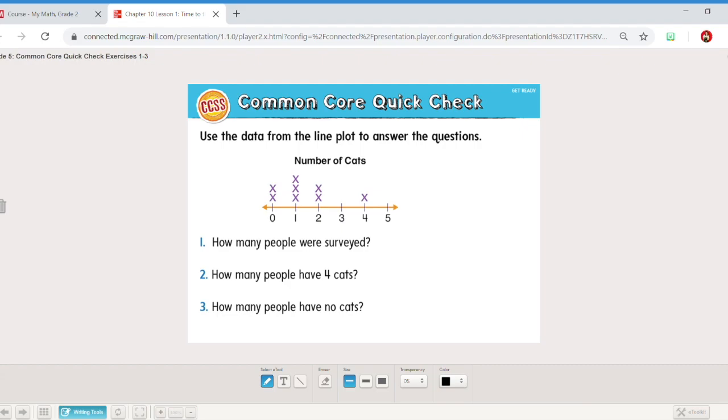So let's add that up. Two plus three plus two plus one. Four. Five. Five plus four is nine. Nine people were surveyed. Or you can just count the x's.